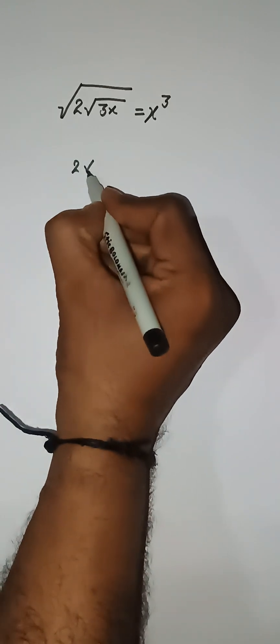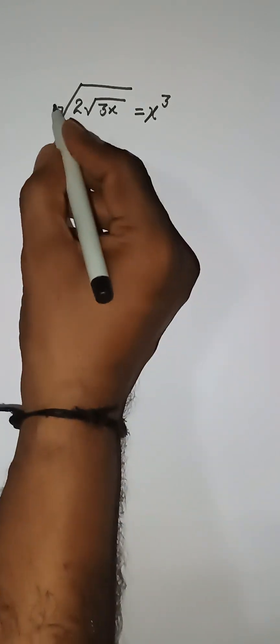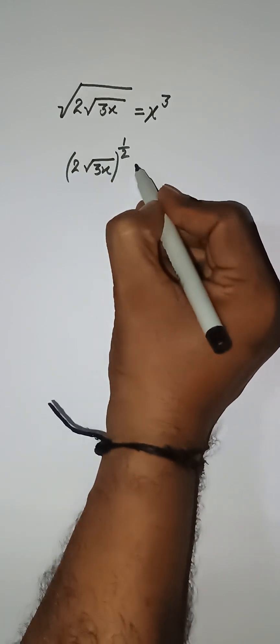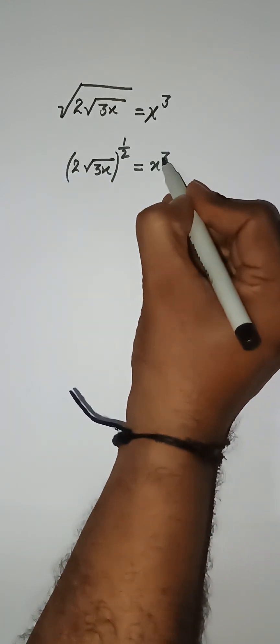Here we have square root of 2 cube root of x, and this square root can be written as power 1/2, is equal to x³.